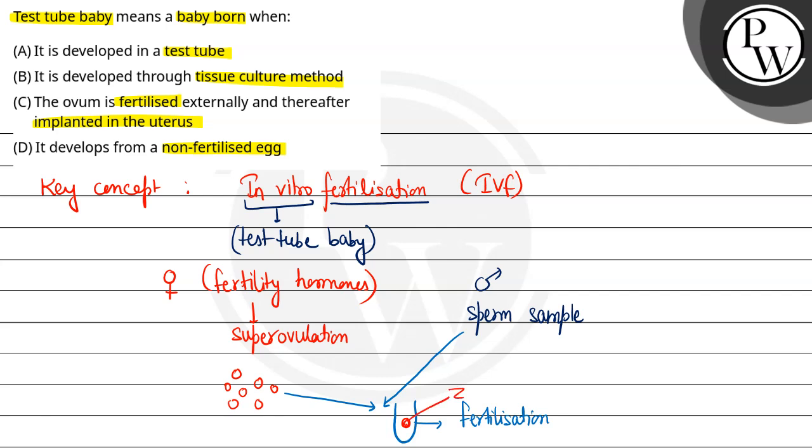After fertilization, a zygote forms. Now this zygote divides into 2 to 8 cells and then is transferred within the fallopian tube. This is called zygote intra fallopian transfer or ZIFT.